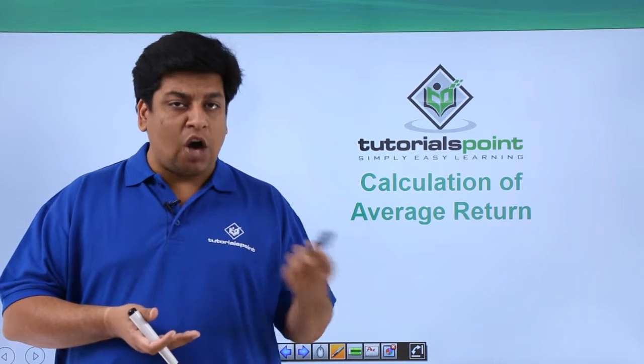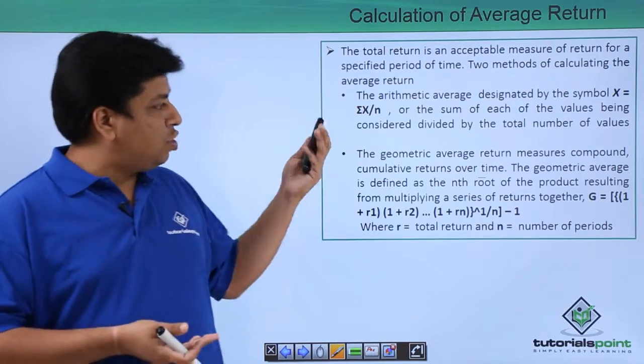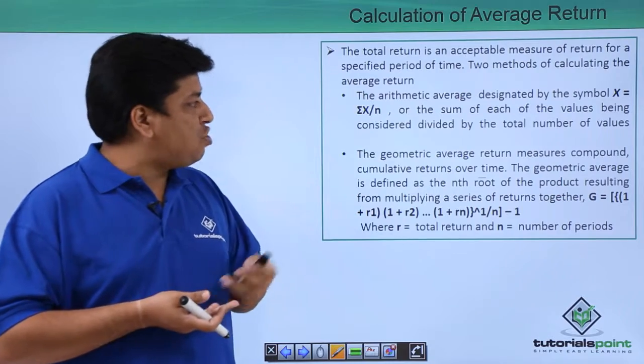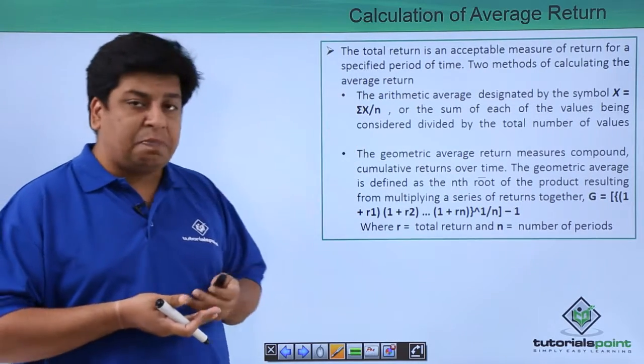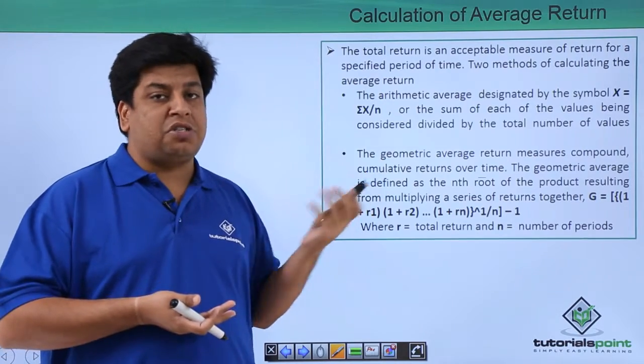Now, let's see how we calculate this average return. The calculation of average return says the total return is an acceptable measure of return for a specified period of time. Two methods of calculating the average return are as follows.